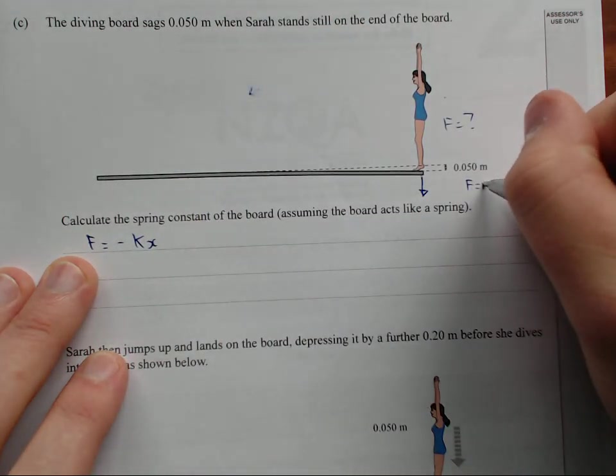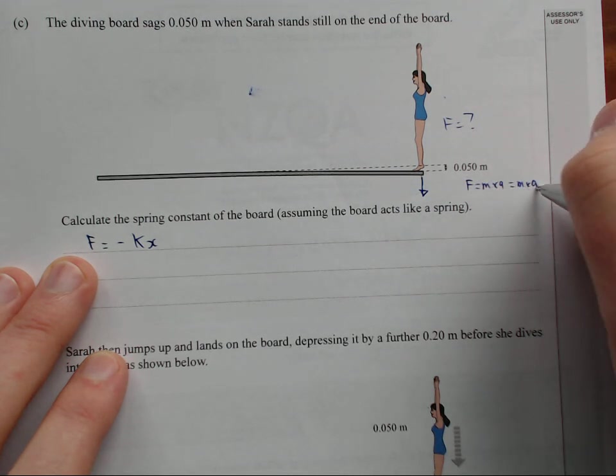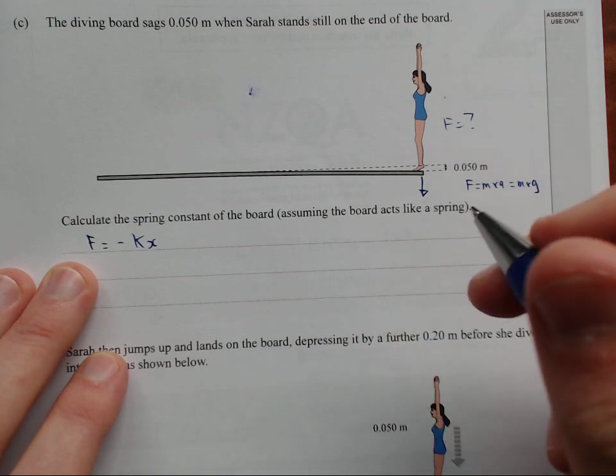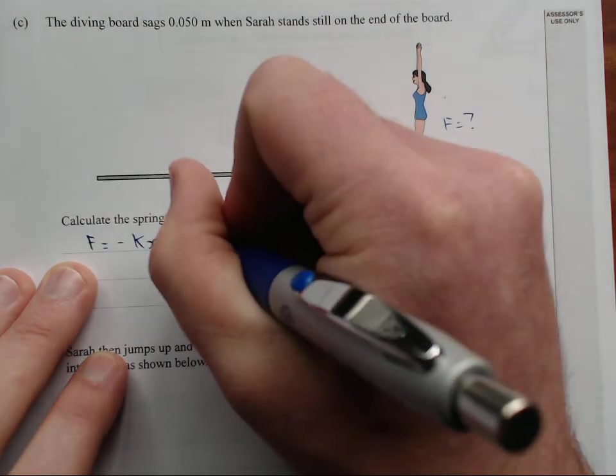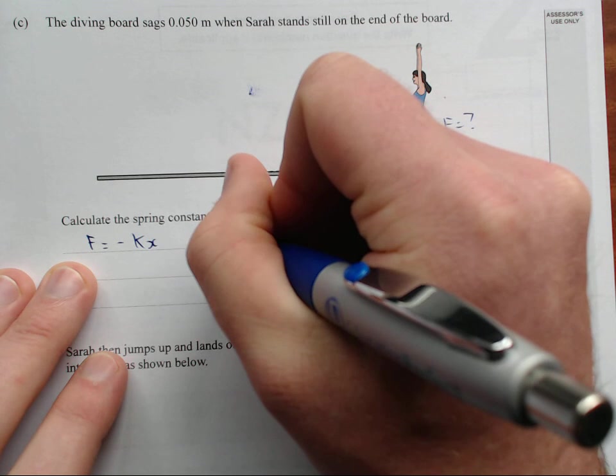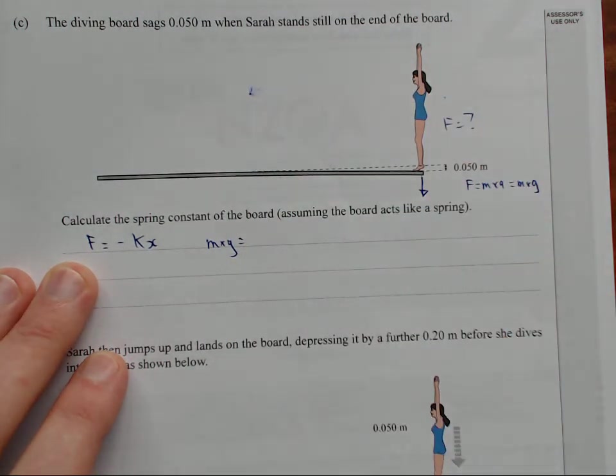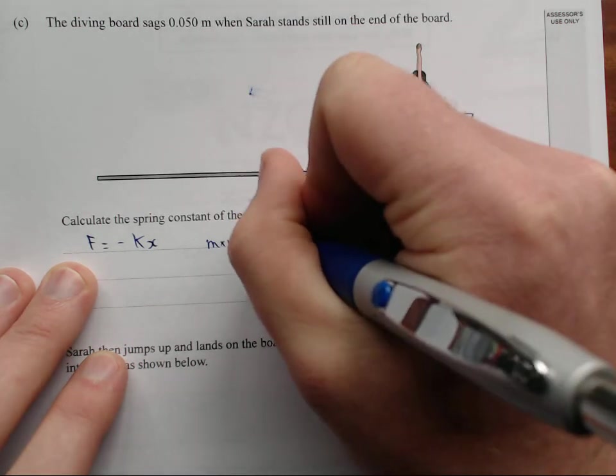Force equals mass times acceleration, which is equal to mass times gravity. We'll substitute that analysis. Mass times gravity. I'll put a times there. Just for privity. Equals minus k x.